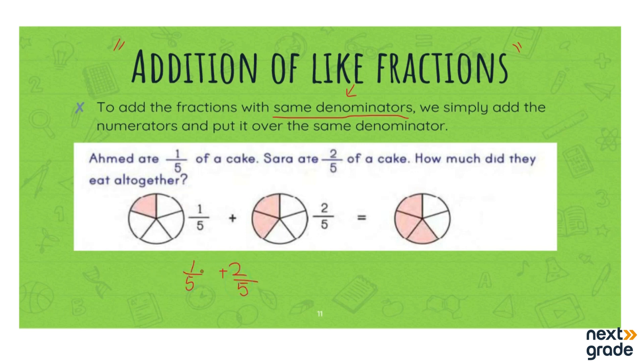So what we will do is we will write it like 1 + 2 and we will put the same denominator for both. Now what is 1 + 2? It's 3, right? So the answer will be 3/5. We will write this image here - it's 3/5, three portions are taken and the total number of portions are five.